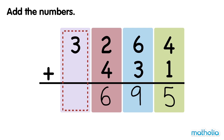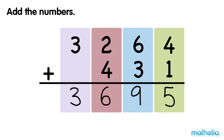Finally, add the thousands. 3 thousands plus 0 thousands equals 3 thousands. 3,264 plus 431 equals 3,695.